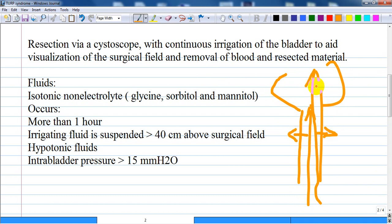The irrigating fluid is usually a nearly isotonic non-electrolyte fluid containing glycine or a mixture of sorbitol and mannitol. This irrigating fluid can be absorbed rapidly via open venous sinuses in the prostate gland.